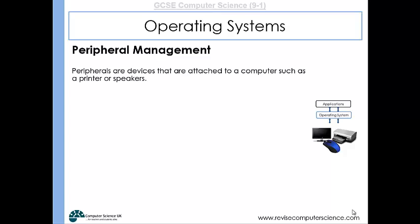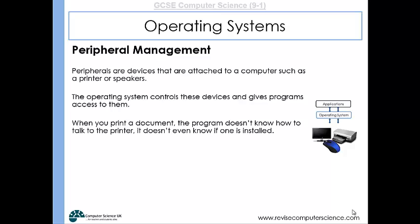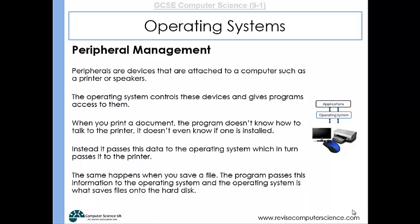The operating system also manages peripheral devices, such as speakers or printers attached to computers. It controls them and gives programs access to them. When you print a document, the program doesn't know how to talk to the printer or even if one is installed, but the operating system does. The word processor sends a message to the operating system, which confirms a printer is attached and sends the file to the printer. Similarly, when you save a file, the program passes the information to the operating system, which saves the file onto the hard disk, because it can talk to the hard disk whereas an application cannot.